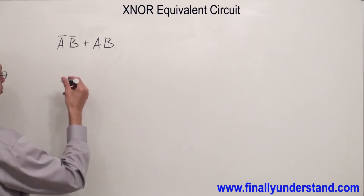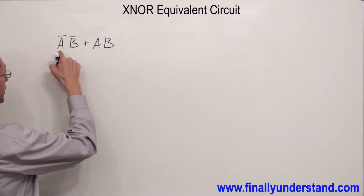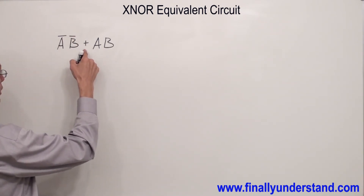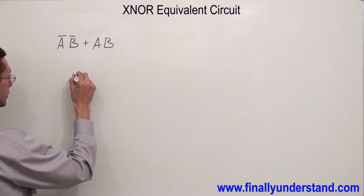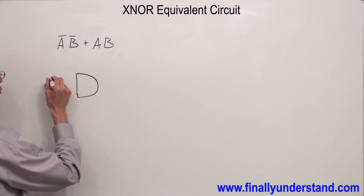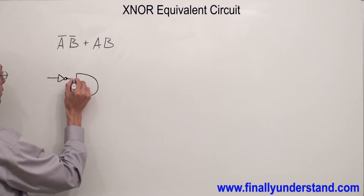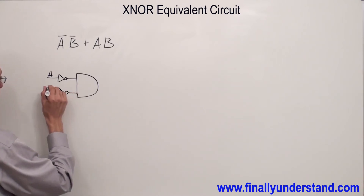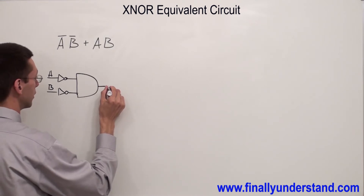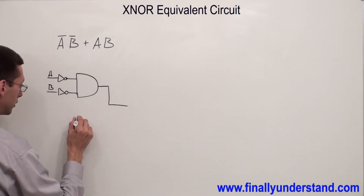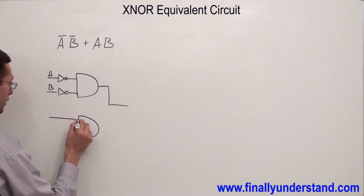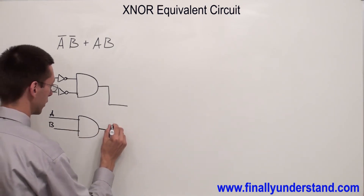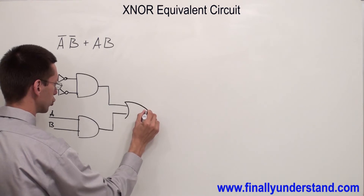I'm going to implement this expression first. I have nothing else, just two AND gates, and two inverters, and one OR gate. I have an AND gate with two inverters. This is A and this is B. Over here I have A, and this is my B. Everything is ORed together.